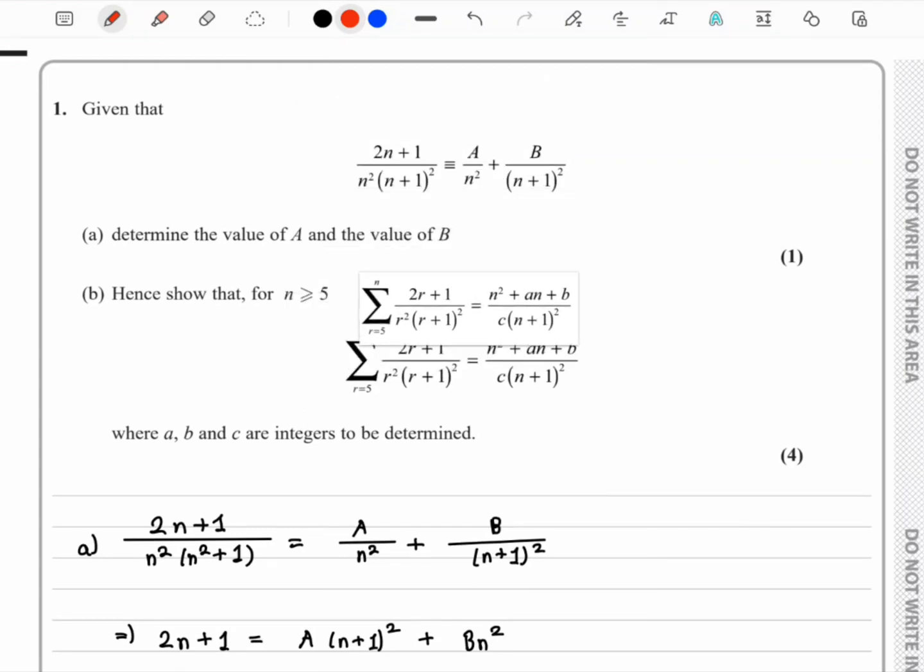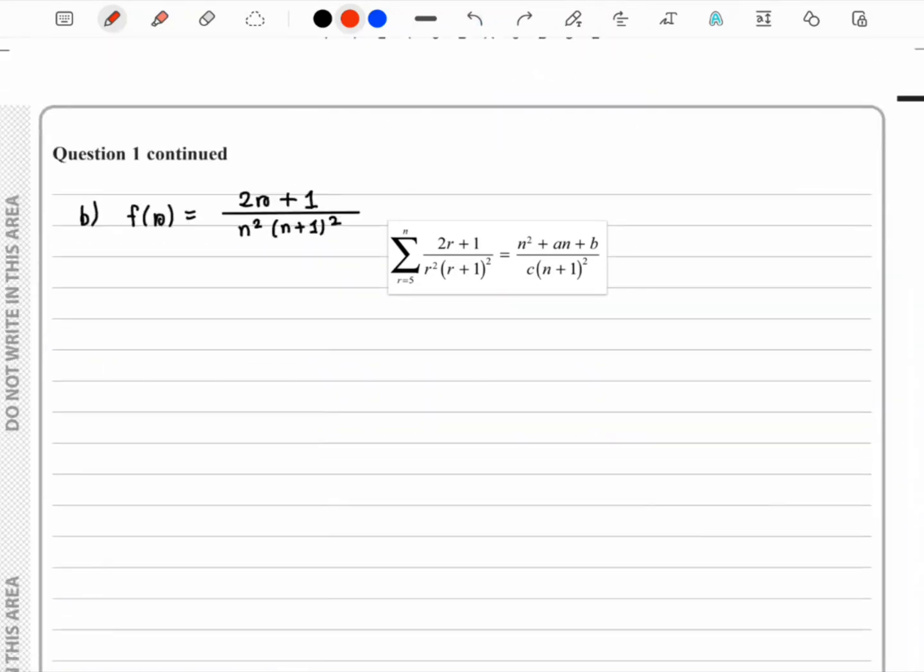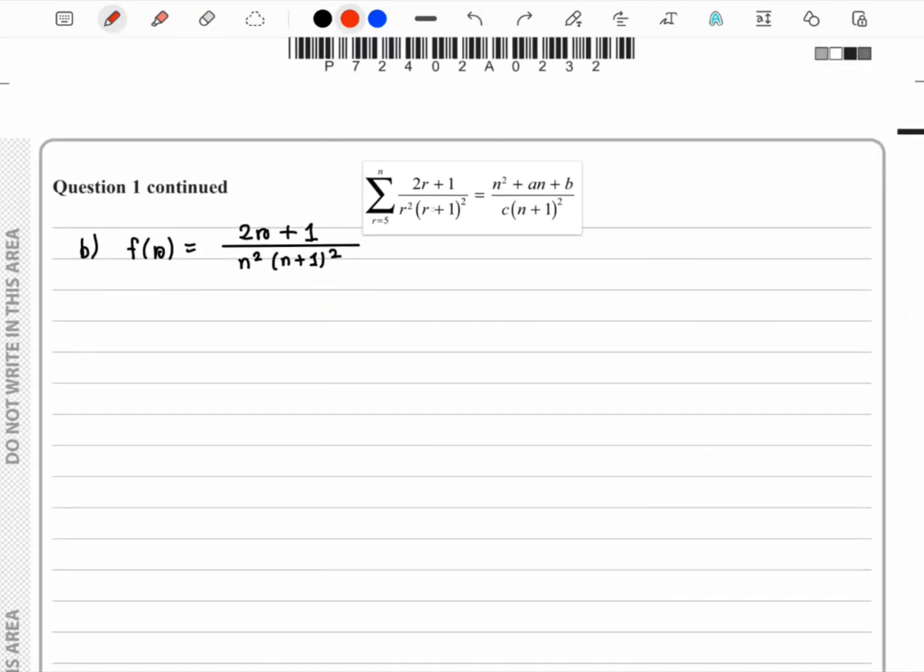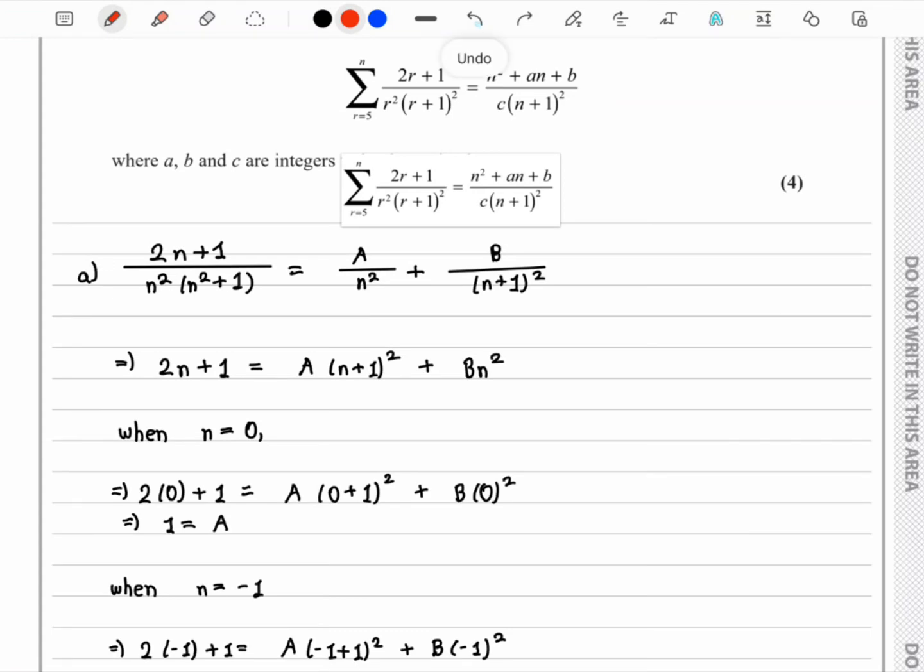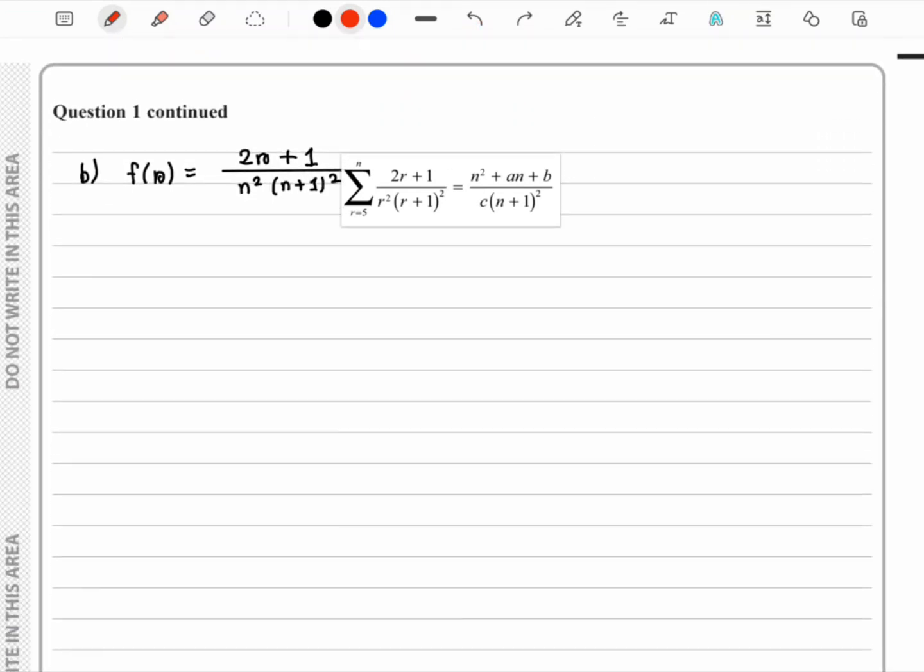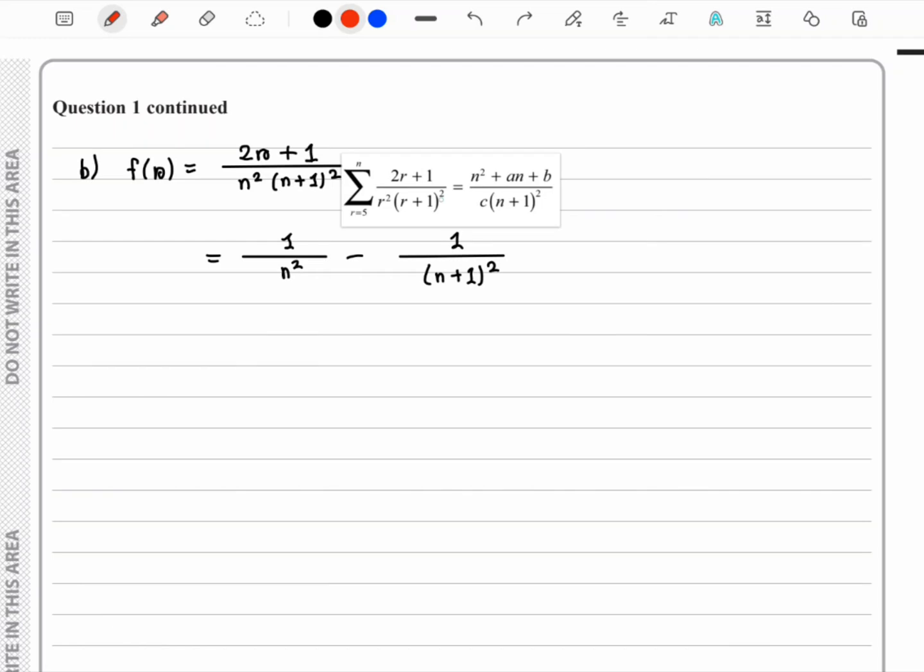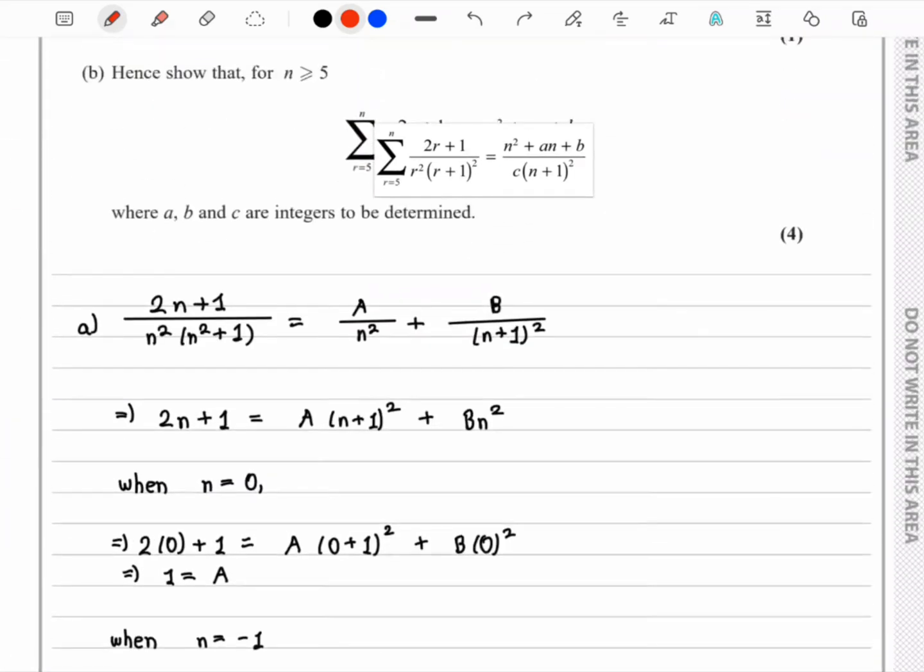Now moving on to part b, we need to find this expression in the form on the right side. We write this function as f(r), and as the initial term is r equals 5, we find f(r) when r equals 5. First, we convert this using the partial fractions from part a and write it as A/n² plus B/(n+1)².